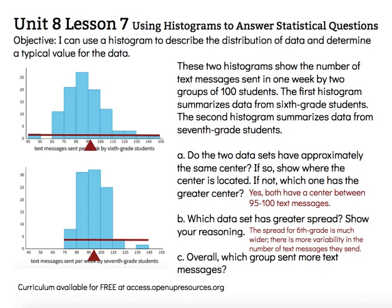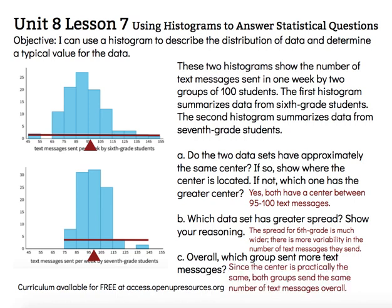Overall, which group sent more text messages? When we're talking about the word overall, we're trying to think about what's typical. Words like typical, in general, and overall are associated again with the mean. So even though we looked at both the spread and the mean, we want to consider the mean for this question. Since their averages or means were pretty much the same, we can say that in general they've sent about the same number of text messages. So since the center is practically the same, both groups send the same number of text messages overall.